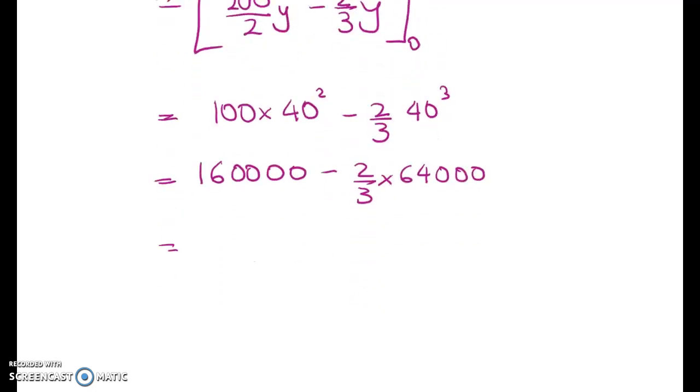This minus 2/3rds of 64,000, which at this point you can reach for your calculator, 160,000. Sorry, I paused the video while I worked that out. So it's 160,000 minus 42,666.6 recurring, which gives us 117,333, and I need units for this.